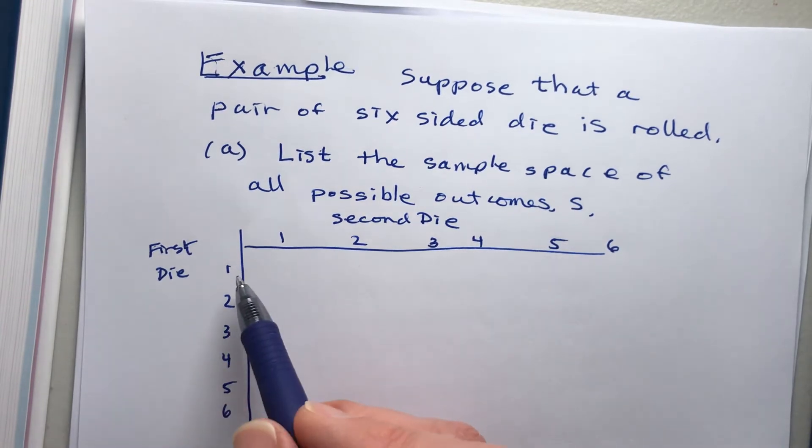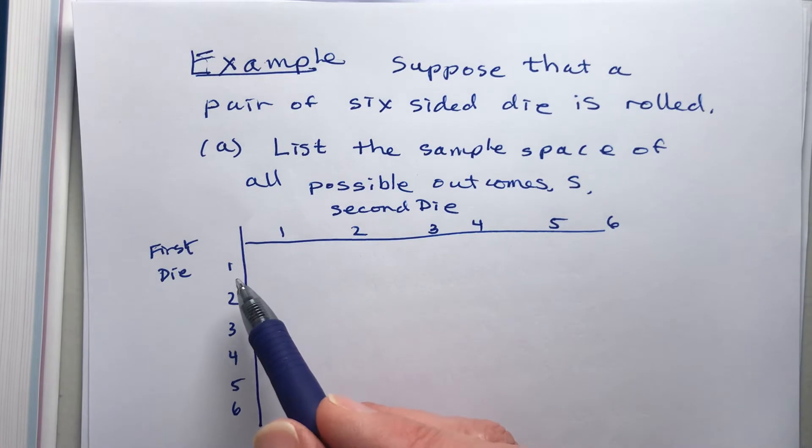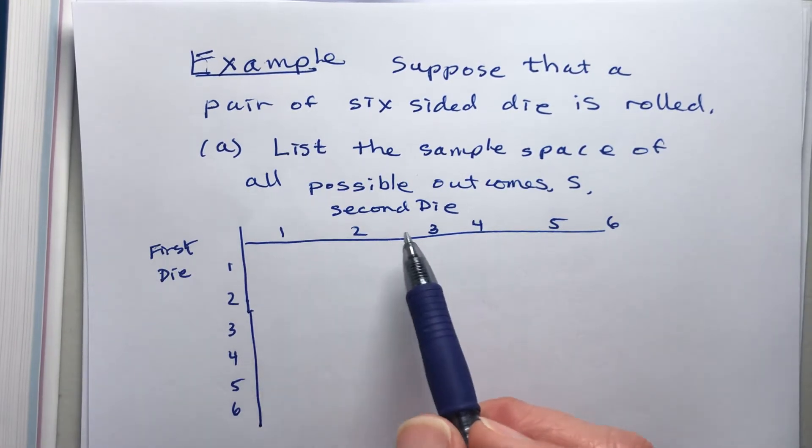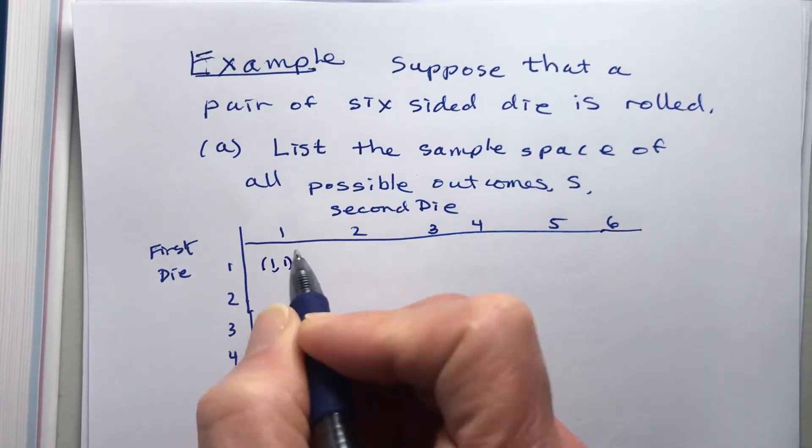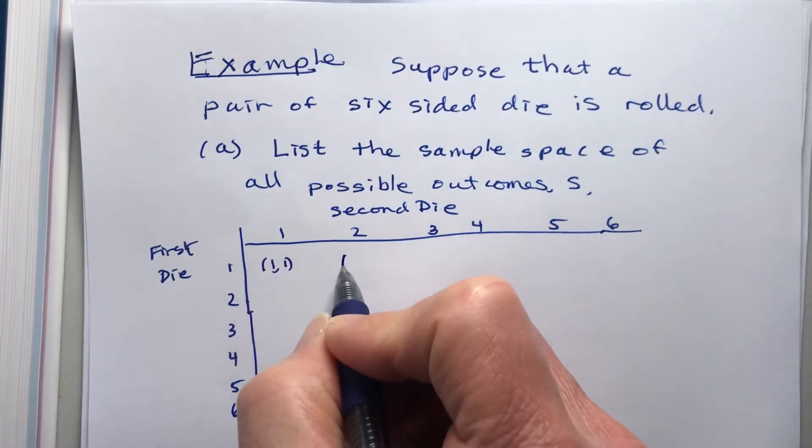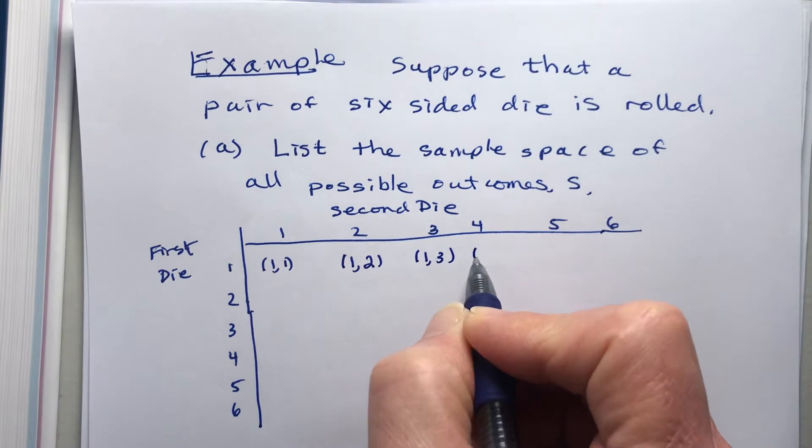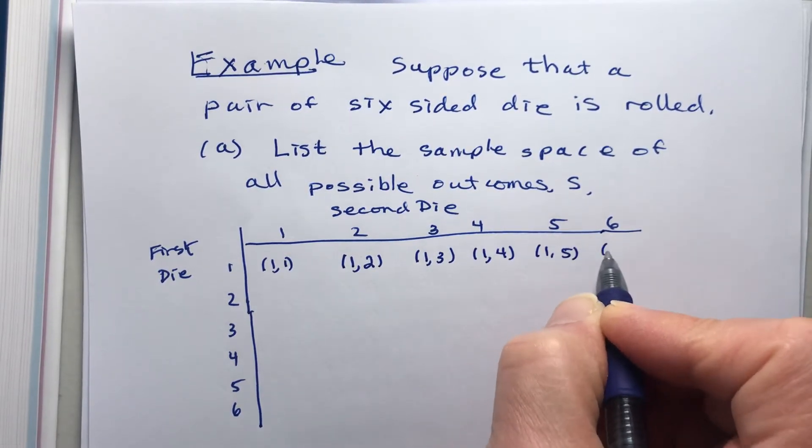So here we have the first die. Maybe they're different colors, so maybe the red one is one, two, three, four, five, six. And then the second one, maybe it's blue, is one, two, three, four, five, six. And then we make a pair: (1,1). So that would mean that the first one rolled is one, the second one rolled is one. Or you could have the first one, the second two: (1,2), (1,3), (1,4), (1,5), (1,6).